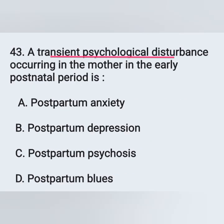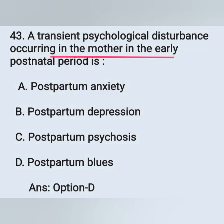Question 43: A transient psychological disturbance occurring in the mother in the early postnatal period is — options: option A, postpartum anxiety; option B, postpartum depression; option C, postpartum psychosis; option D, postpartum blues. The correct answer is postpartum blues. Option D is the correct answer.